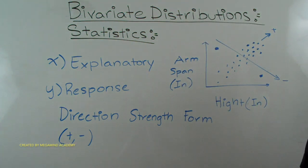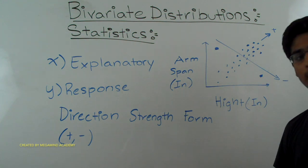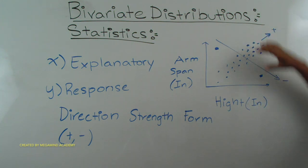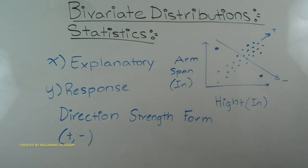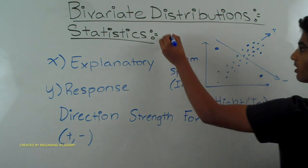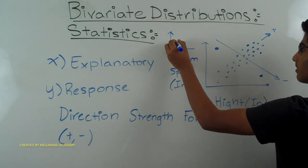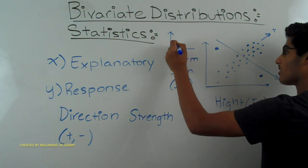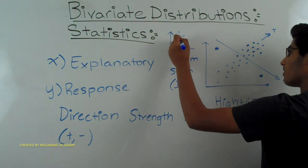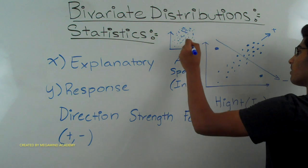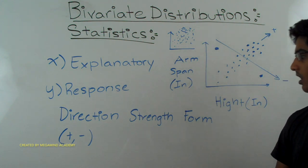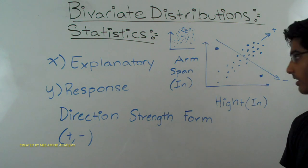The strength tells us how well the data fits a trend. We can have a distribution that follows a trend really closely, or somewhat closely, versus one that is super spread out with only a general upward trend but not much of a correlation. So strength basically tells us how well it fits a trend line.